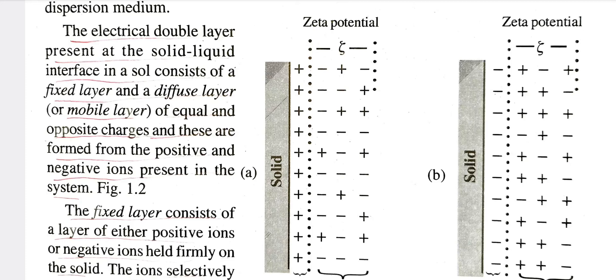We are going to look at the fixed layer and the diffuse layer. The diffuse layer is movable — it is the mobile layer — consisting of equal and opposite charges formed from positive and negative ions.